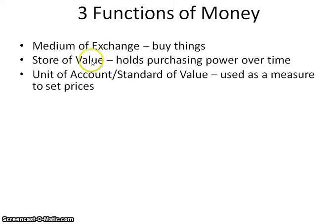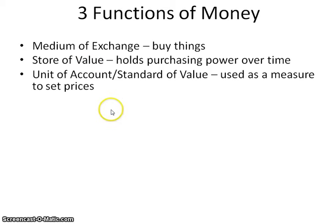When we're talking about the three functions of money, you need to know what the three are. First, it's a medium of exchange, meaning it's used to buy things. Second, it's a store of value, meaning that it will add up in value and purchasing power wherever it is that I'm putting it. So if I have cash and I'm putting it in my savings account, that purchasing power will continue to grow.